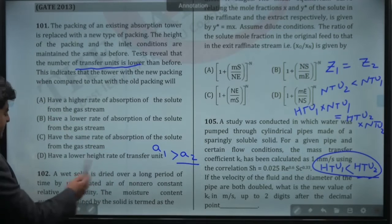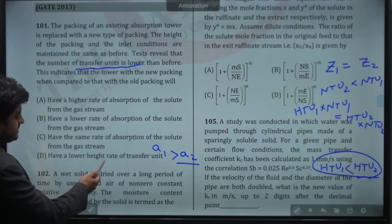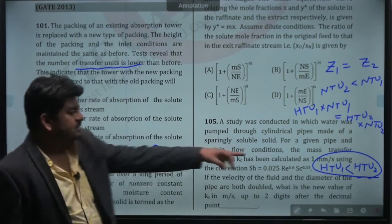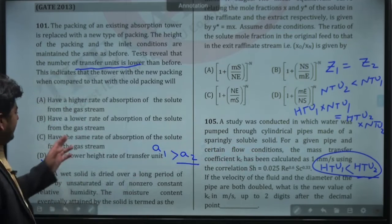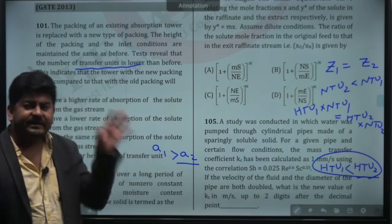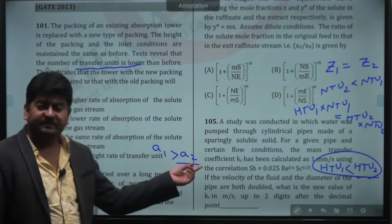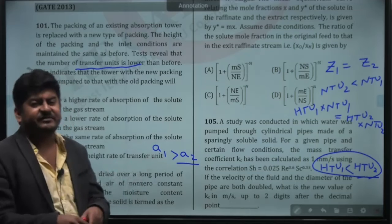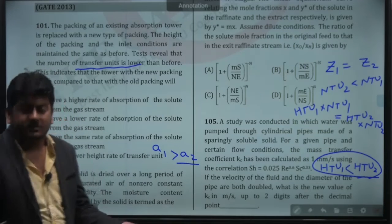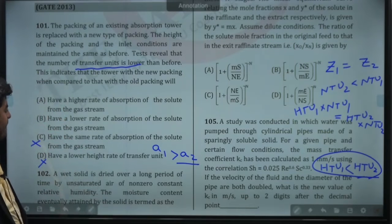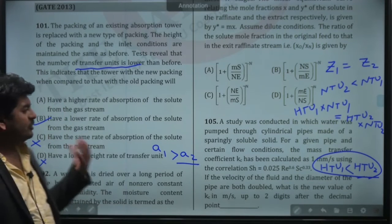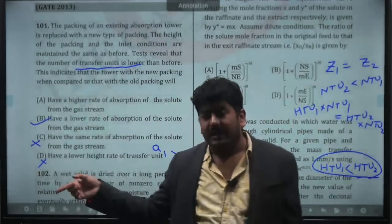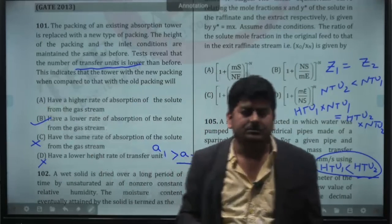So here, first thing - have a lower height of transfer unit? C or D - lower HTU? No, that is incorrect obviously. Have the same rate of absorption? Obviously not possible. Inlet conditions are same and everything is same, but specific interfacial area is reduced. So obviously contact area between the phases will reduce, contact time between the phases will reduce, so the rate of mass transfer between the phases will also reduce. So B will be the answer - it will have lower rate of absorption because rate of mass transfer. So that is what I was saying - we always check for HTU, after that we will go for anything.